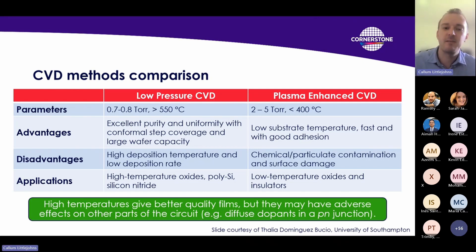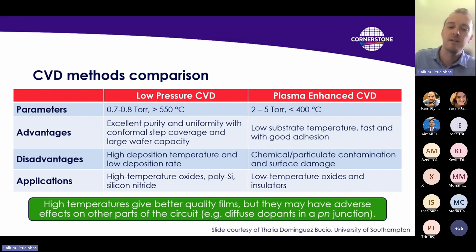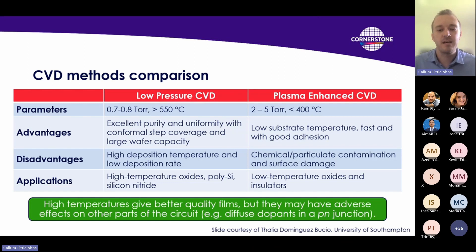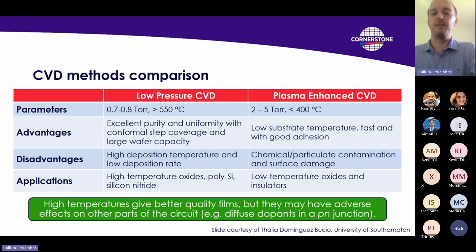The answer is that that temperature will affect other devices that may already be built into your substrate. Thinking back to the carrier depletion modulator — at the point we come to add the cladding, which is where we'd use a CVD process, we already have lots of dopants in the wafer. If we used a low pressure high temperature process, all of those dopants would diffuse and you'd basically destroy your device. So we need to use a plasma chemistry that can happen at much lower temperatures so that the dopants aren't diffused. The drawback is that we get a lower quality film.